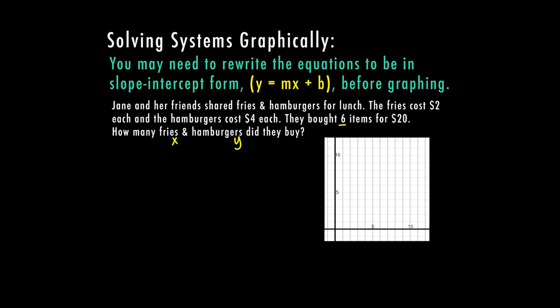We can create two equations from this problem. Fries will be our x and hamburgers will be our y. The first equation: they bought six items total, so x plus y equals 6. The second equation is based on cost: the fries were two dollars each, so that's 2x; the hamburgers were four dollars each, so that's 4y; and that equals the total cost of twenty dollars: 2x plus 4y equals 20.